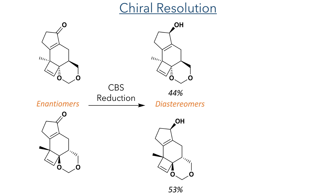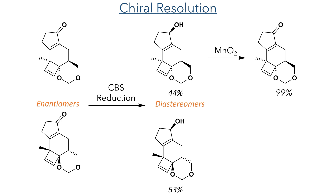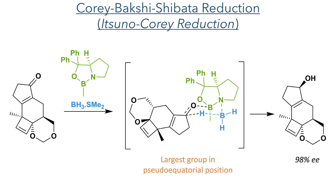To take the product of the photochemical cascade further, the authors first had to separate the two enantiomers which were formed. To do this they carried out a CBS reduction to stereoselectively reduce the carbonyl group, forming a pair of diastereomers which they could then separate by chromatography. Once separated, they then re-oxidised the hydroxyl group back to a carbonyl using manganese dioxide. This CBS reduction, known as the Corey-Bakshi-Shibata reduction or also the Itsuno-Corey reduction, uses a chiral oxazaborolidine reagent to control the stereochemistry of the reduction. This forms a complex with the substrate and borane, which acts as the reducing agent, forming a six-membered chair-like intermediate where the largest group occupies the pseudo-equatorial position, allowing the hydride to be selectively delivered from one face. This was successful in producing the reduced compound in 98% enantiomeric excess.